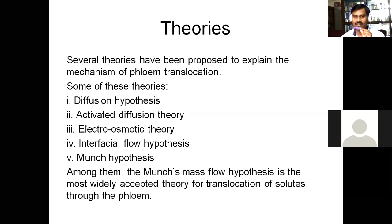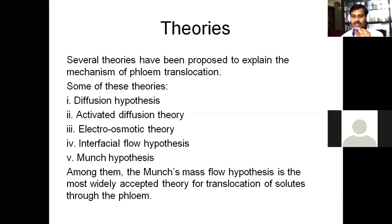Another theory is the interfacial flow hypothesis, related to flow outside of the cell. Here, the food material moves superficially through the phloem, but again this theory has limitations. So the most accepted theory for the translocation of organic solutes is the Munch mass flow hypothesis, which is widely accepted.